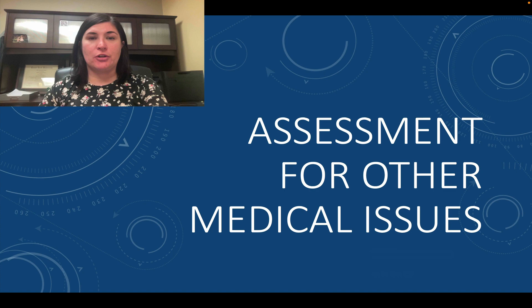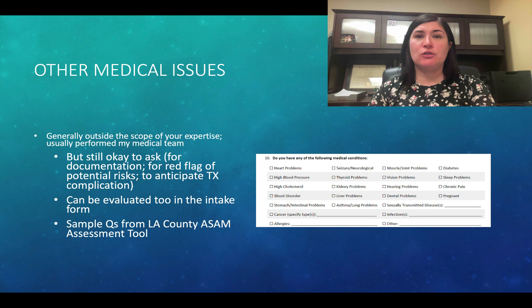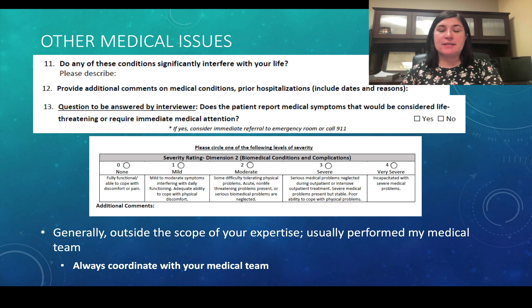Lastly, we're going to talk about assessment for other medical issues that might come up in your substance abuse evaluation. This is still part of dimension two, and a little bit into dimension three of the ASAM multidimensional criteria. Generally speaking, these assessments are outside the scope of your expertise and are usually performed by the medical team, but it may still be appropriate for you to ask specific questions for documentation or to red flag potential risk. This can be evaluated at the intake form — sample questions from the LA County ASAM assessment tool might include: do they have specific medical conditions like diabetes, heart problems, or thyroid issues? As the evaluator, you would then rate the severity rating for dimension two and coordinate with the medical team.